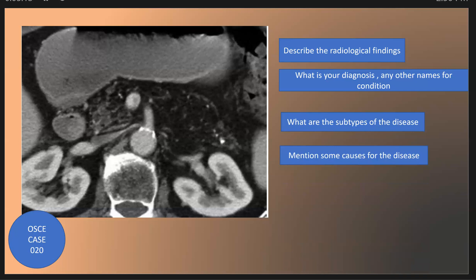What are the causes of pancreatic lipomatosis? There are several etiologic causes. It can be metabolic, such as dyslipidemia or diabetes mellitus, and sometimes associated with clinical syndromes. The most common syndrome is cystic fibrosis, which is common in children. Other associated syndromes include Shwachman-Diamond syndrome and Johanson-Blizzard syndrome.